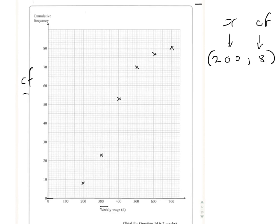So now we draw a smooth curve through the points. Mine's a bit rough and ready because I'm using the iPad, but you get the idea. And we're asked to find the interquartile range.